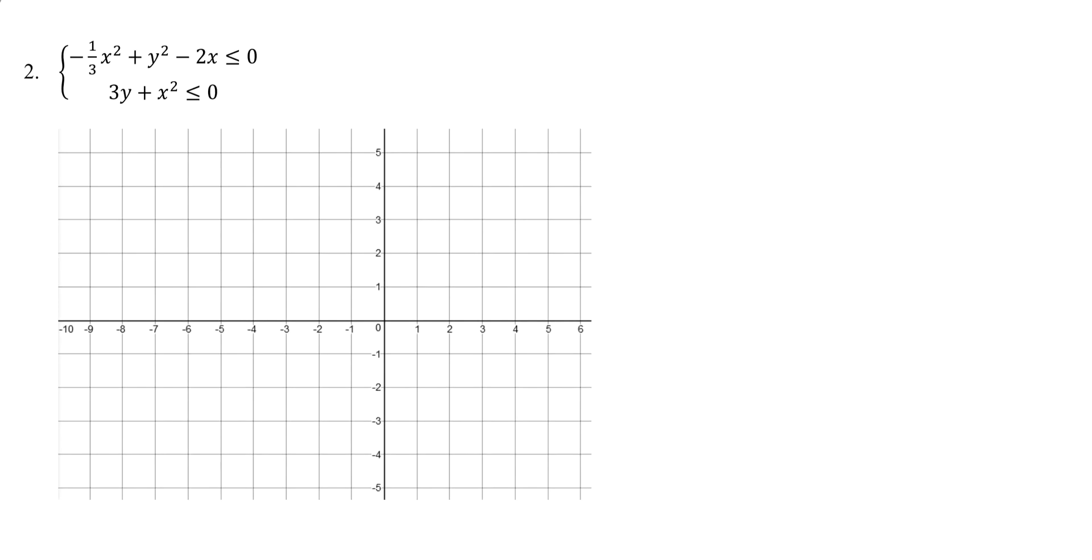Here we have example number two for solving systems of quadratic equations. Actually, this one is going to be inequalities. So we're going to graph this one and then we're going to shade the appropriate regions and find out where is the overlap of the two separate inequalities.